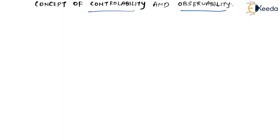Speaking about the meaning of controllability and observability, before that let us recall our state space model, which is very important: X-dot = AX + BU, and Y = CX + DU.